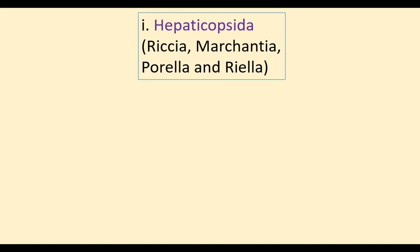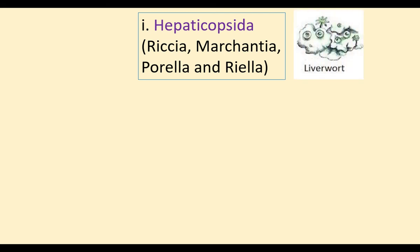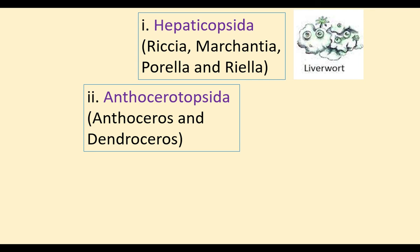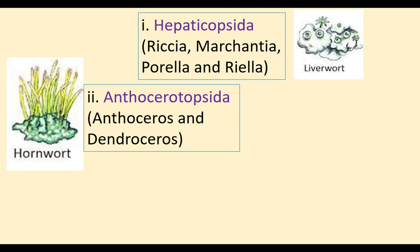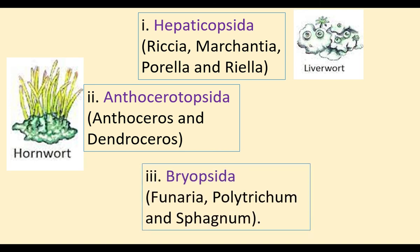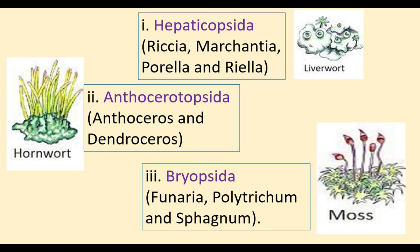Hepaticopsida is the first class of bryophytes. Examples: Riccia, Marchantia, Porella, and Riella (the aquatic member). Members are commonly called liverworts. Anthocerotopsida is the second class; examples include Anthoceros and Dendroceros, commonly called hornworts. Bryopsida is the third class; examples include Funaria, Polytrichum, and Sphagnum, commonly called mosses.